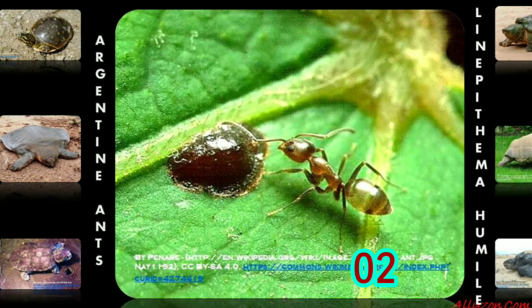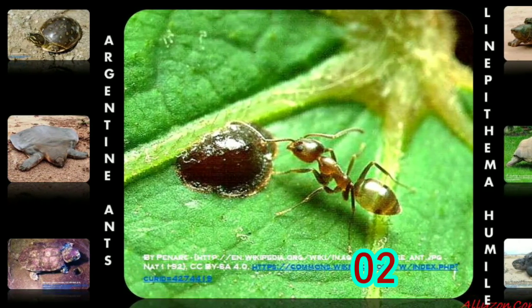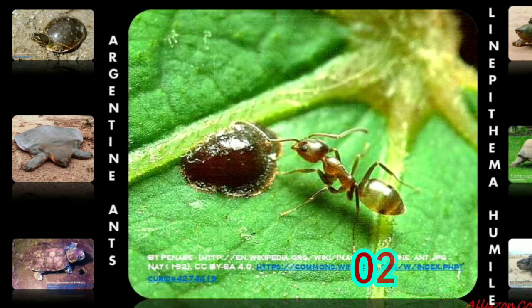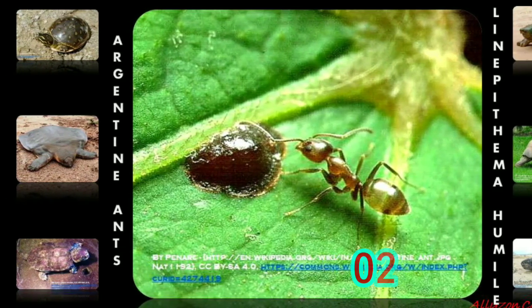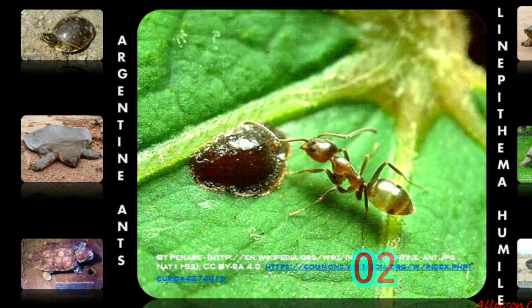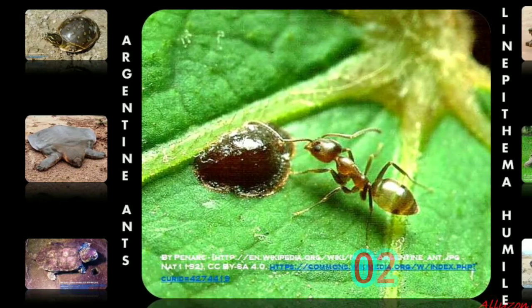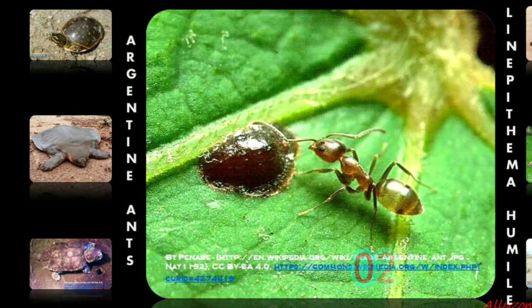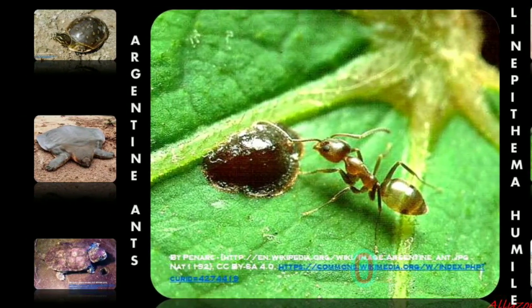Queens lay as many as 60 eggs per day. Development from egg to adult averages 74 days for workers. Worker longevity is 12 months.